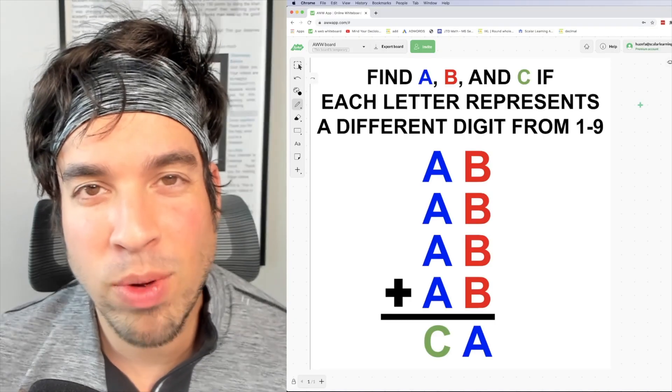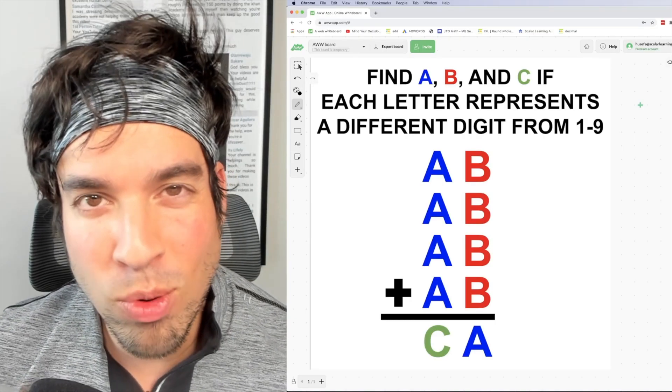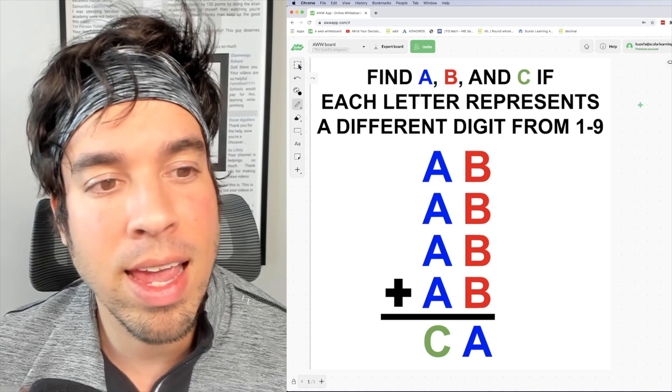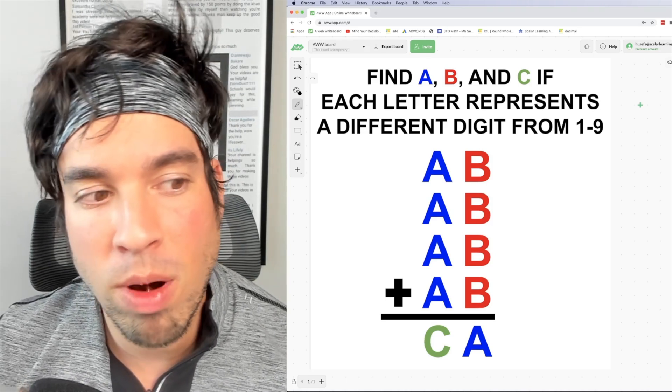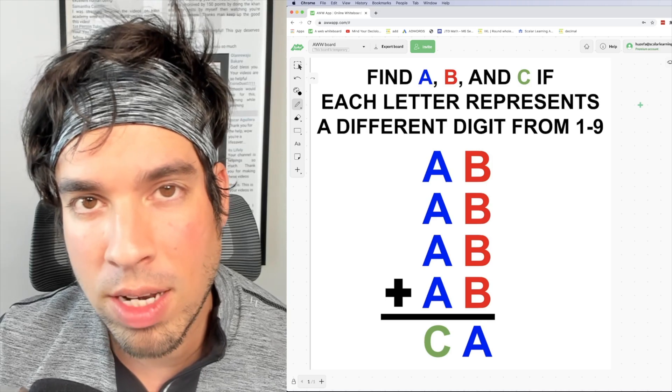What's up everybody and welcome back to another math puzzle. In this one the question is to find a, b, and c if each letter represents a different digit from one through nine.